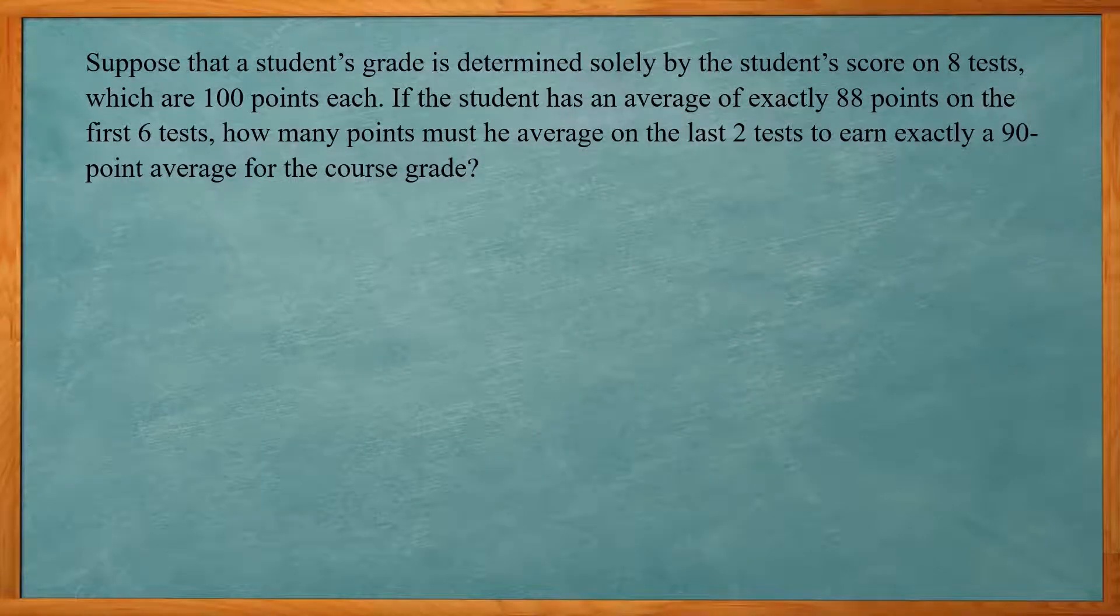Suppose that a student's grade is determined solely by the student score on eight tests, which are 100 points each. If the student has an average of exactly 88 points on the first six tests, how many points must he average on the last two tests to earn exactly a 90 point average for the course grade? So again, we're going to basically base it off our average formula. So if there is an average of 88 points on the first six tests, that's going to be 88 times 6.